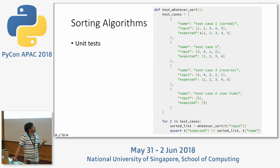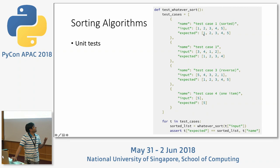If the input is [1,2,3,4,5], which is already sorted in ascending order, the expected output should be the same: [1,2,3,4,5]. Then there is another test case: if the input is random like [3,4,1,2], the expected output is [1,2,3,4].